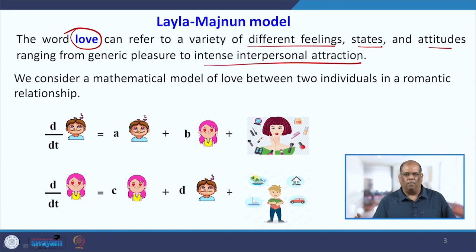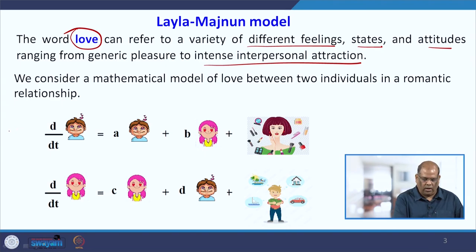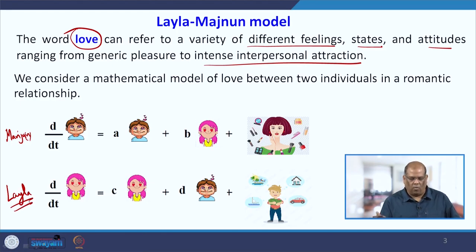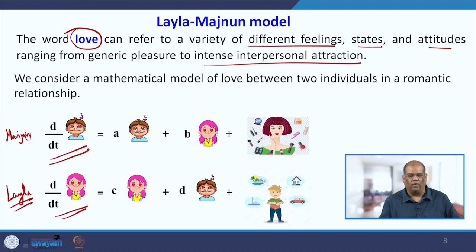We consider a mathematical model between two individuals in a romantic relationship — we call them Majnu and Laila. These are the rate of love for Majnu and the rate of love for Laila respectively.